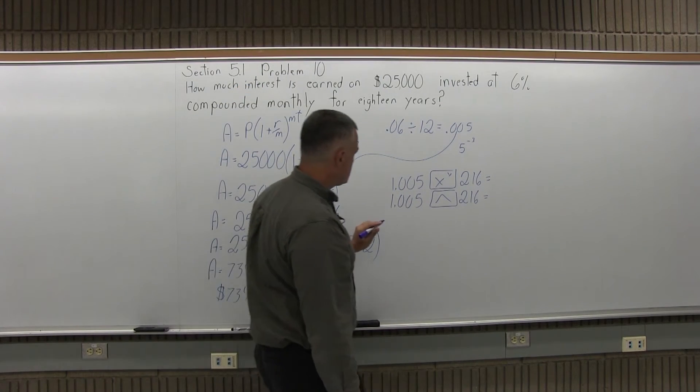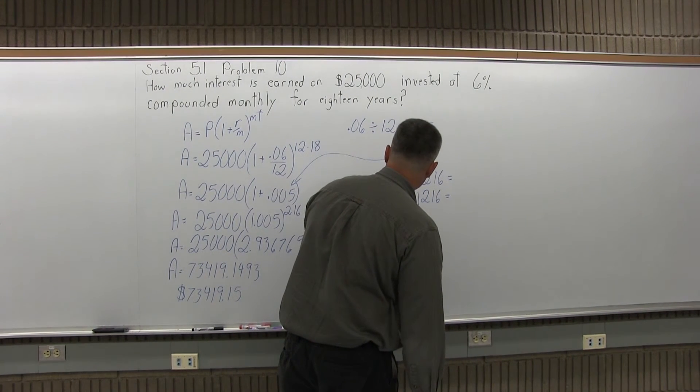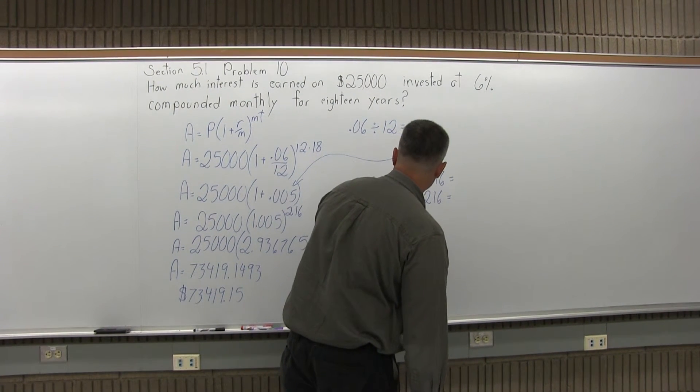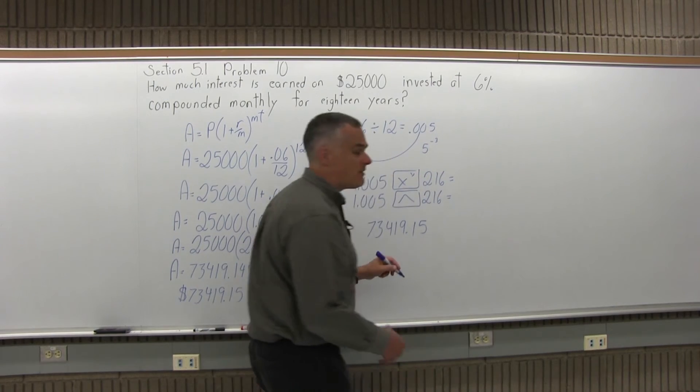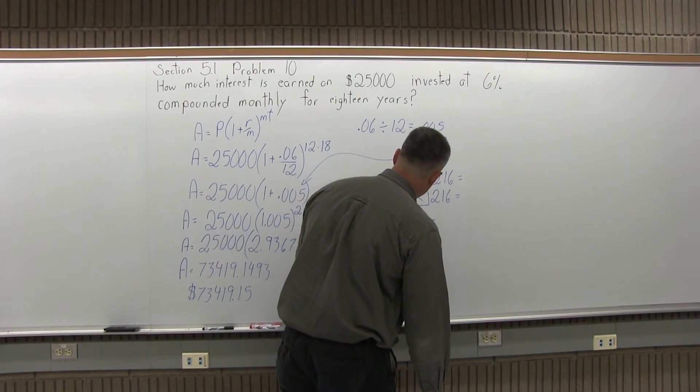So we initially put in $25,000. I have to subtract that $25,000 away from the final amount in the account. To finish this problem, you have to take the total amount in the account, which is $73,419.15, and to figure out how much interest you earn, you have to pull away the $25,000 that you put in as principal.